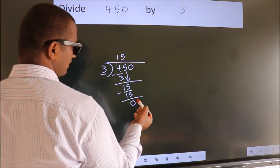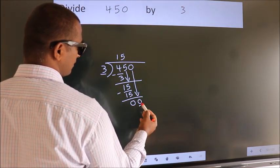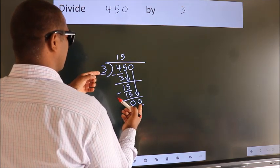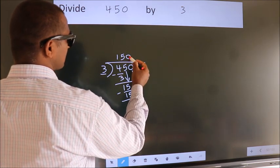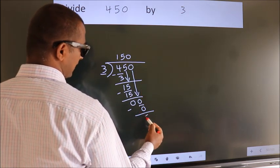After this, bring down the beside number. So 0 down. So 0. When do we get 0? In 3 table. 3 times 0. 0. Now we subtract. We get 0.